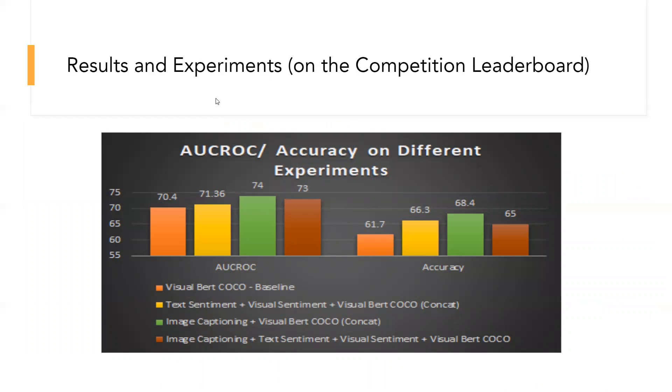Finally, following are the results for our experiments on the leaderboard of the Facebook challenge, where we got the best AUC ROC and accuracy with the image captioning model with Visual BERT on MMF framework. Compared to the Visual BERT baseline, which gives us an AUC ROC of 70.4 and accuracy of 61.7%, we get significant improvements in our approaches. The image captioning gives us an AUC ROC of 74% and accuracy of 68.4%, which is a significant increase from the baselines.